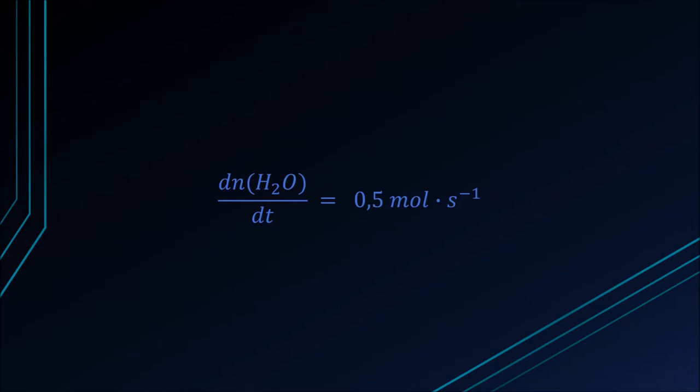Now let's look at the ratio of oxygen to water vapor. Since the rate of formation of water vapor is 0.5 moles per second, we can substitute this into the equation. This means the rate of consumption of oxygen is 0.25 moles per second.